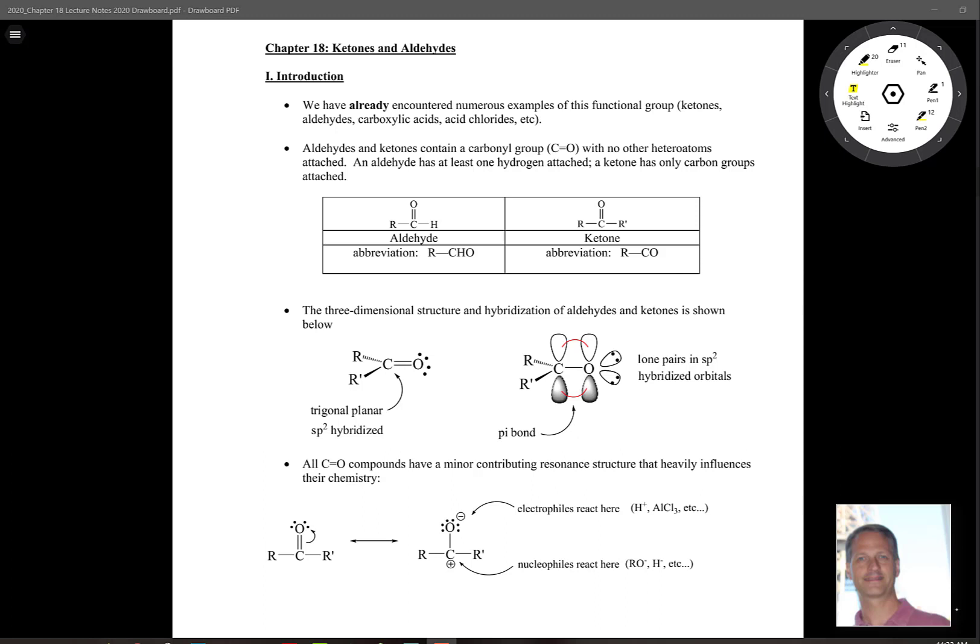As far as aldehydes and ketones are concerned, we've seen these before. We've encountered them numerous times. Remember that the structure of an aldehyde is a carbonyl adjacent to an R group and a hydrogen atom. We identify it as a carbonyl group. And then a ketone is just the same carbonyl except with an R group on both sides of that carbonyl. We often abbreviate aldehydes as RCHO and a ketone as RCOR.